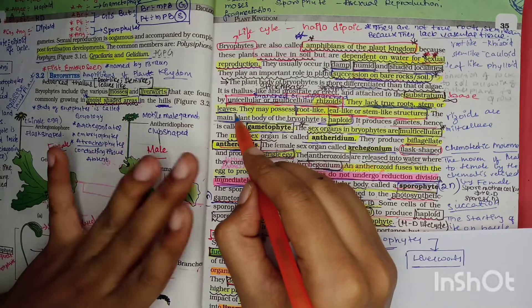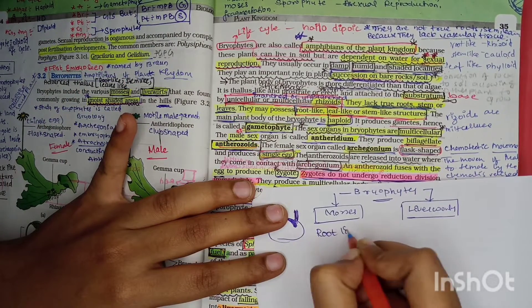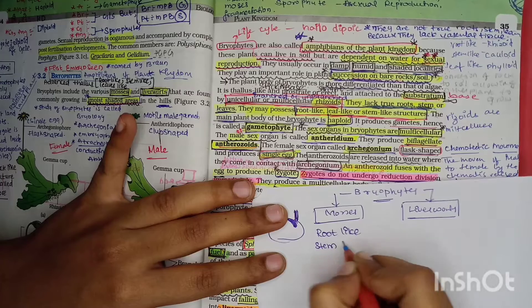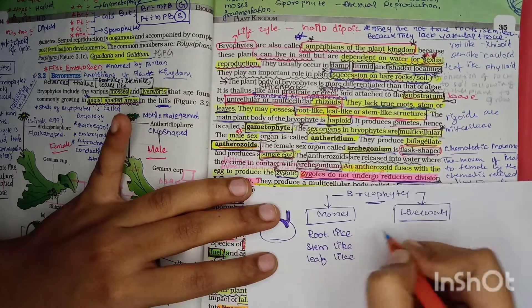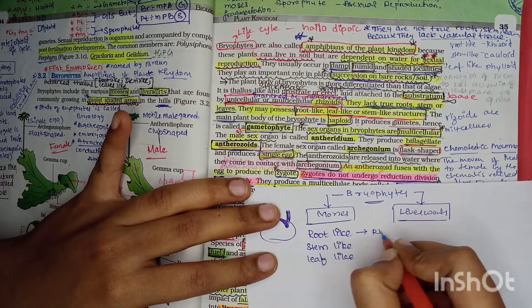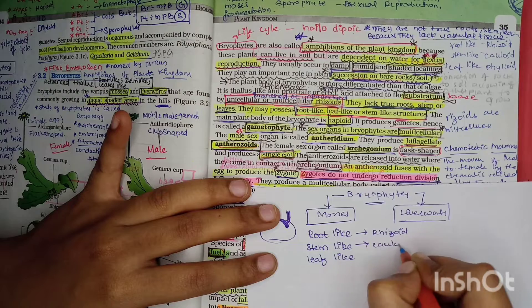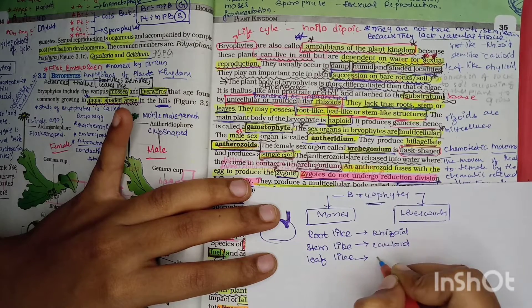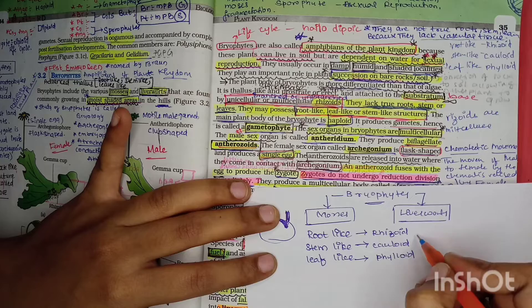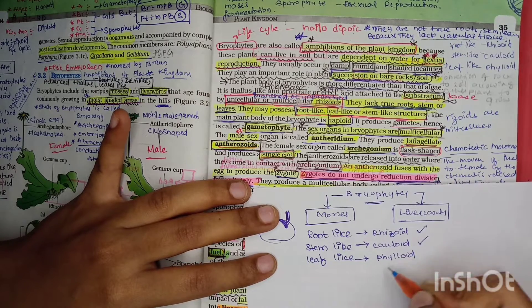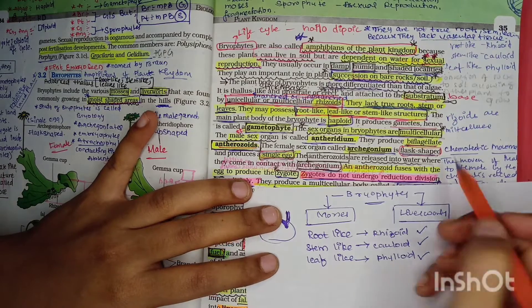Although true roots, stems, and leaves are absent, root-like, stem-like, and leaf-like structures are present. The root-like structure is known as rhizoid, the stem-like structure is known as cauloid, and the leaf-like structure is known as phylloid. These are important terms to remember.